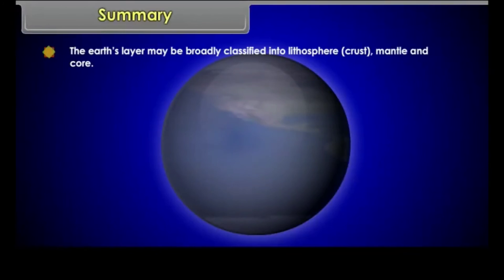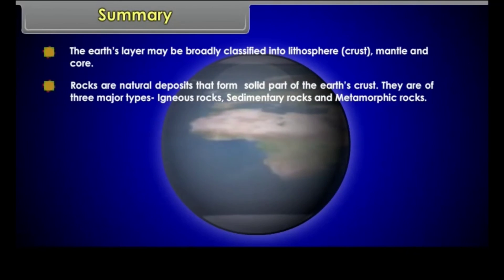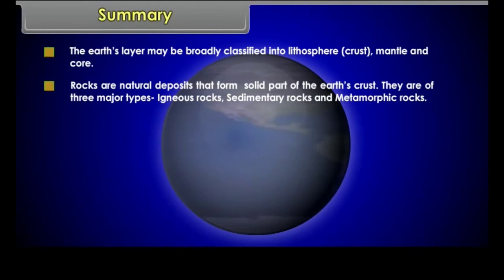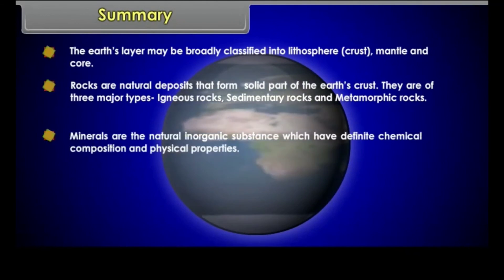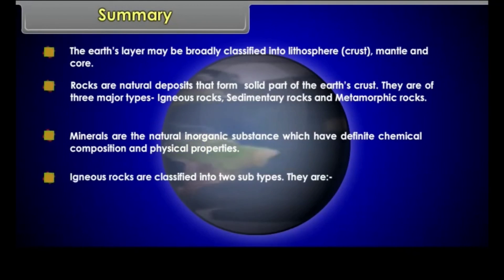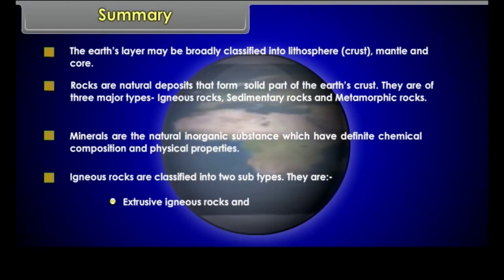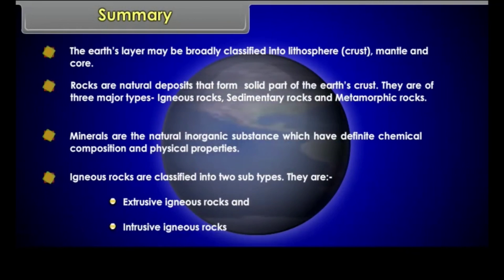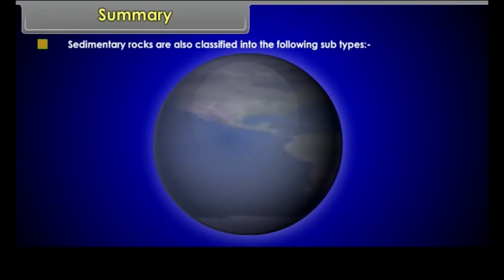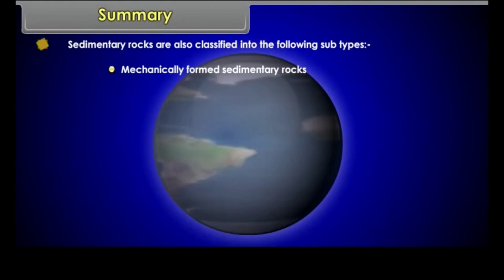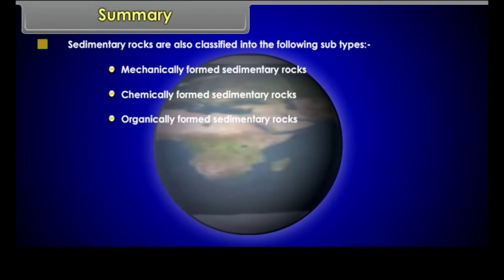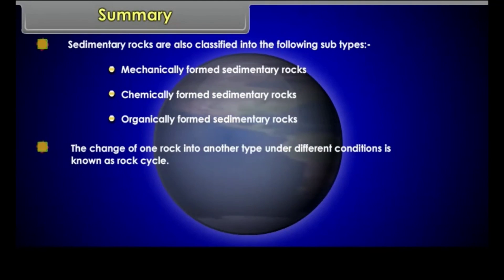Summary. The Earth's layers may be broadly classified into lithosphere, crust, mantle, and core. Rocks are natural deposits forming the solid part of the Earth's crust — they are of three major types: igneous, sedimentary, and metamorphic rocks. Minerals are natural inorganic substances with definite chemical composition and physical properties. Igneous rocks are classified into extrusive and intrusive subtypes. Sedimentary rocks are classified into mechanically formed, chemically formed, and organically formed subtypes. The change of one rock into another type under different conditions is known as the rock cycle.